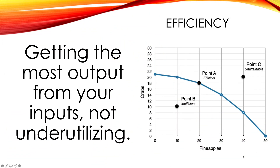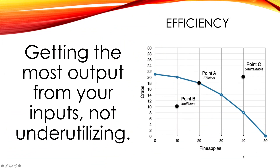The first goal is economic efficiency. Efficiency is a pretty simple concept — the idea is getting the most output from your inputs. We also talked about labor productivity in an earlier video. In other words, you are not underutilizing; you are using your resources to the fullest possible potential. In graph form, we looked at this with production possibilities curves. If an economy only produces two things — crabs and pineapples — any point along this line is an efficient point of production.